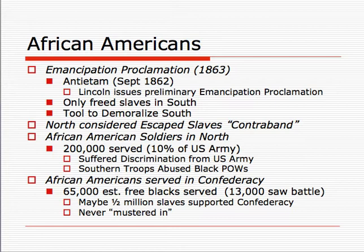One thing to understand about the Emancipation Proclamation is who it really applied to. It didn't apply to slaves in the North, only to slaves in the South. It didn't apply to states along the Ohio River, the middle states. Did it really free any slaves? Actually, very few. It didn't free any slaves in the South—the only place where it was applied—because Northern troops didn't have control of the South. So slavery still existed even after the Emancipation Proclamation.